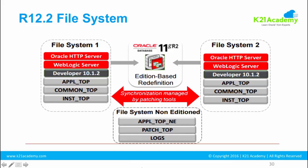Prior to 12.2 there used to be just one file system, and that's where you used to have web tier, forms and reports, APPL_TOP, COMMON_TOP, and INST_TOP. Now, in order to support online patching, Oracle introduced a dual file system. We will cover dual file system and online patching in its own dedicated module. At a high level, you have one file system used by the running environment, and another file system is where you patch. Once patching is done, you swap the file systems. This is why you have file system 1, and file system 2 which is a replica of file system 1 and is used while patching.